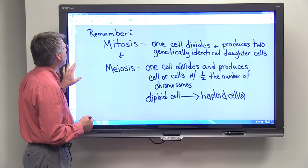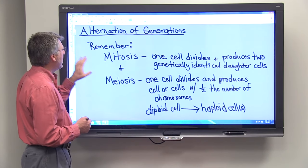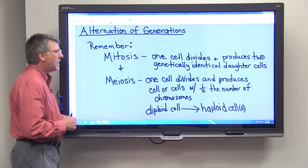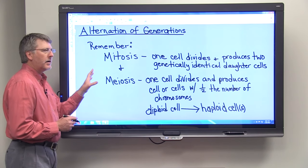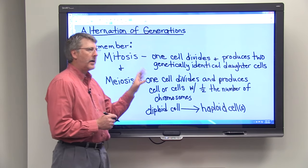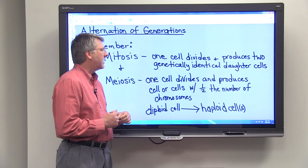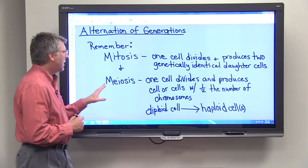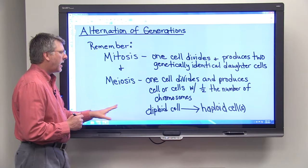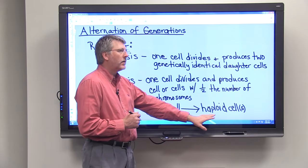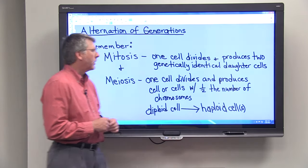So alternation of generations uses both mitosis and meiosis. Mitosis, one cell divides, produces daughter cells that are genetically identical. Meiosis, when the cell divides, the resulting cell is haploid.